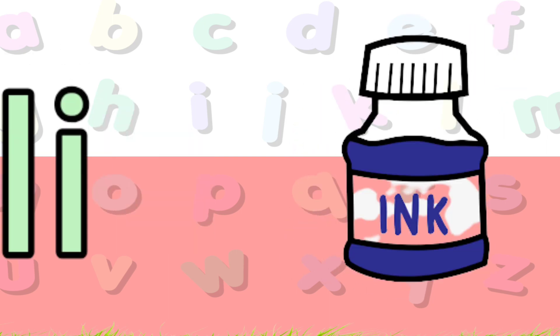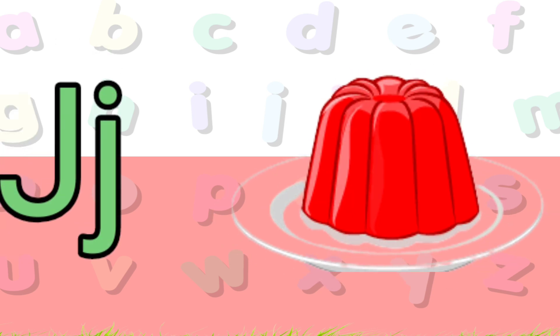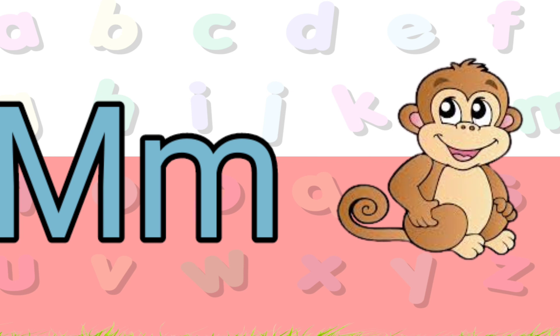I is for ink, J is for jelly, K is for ketchup, L is for lens, M is for monkey.